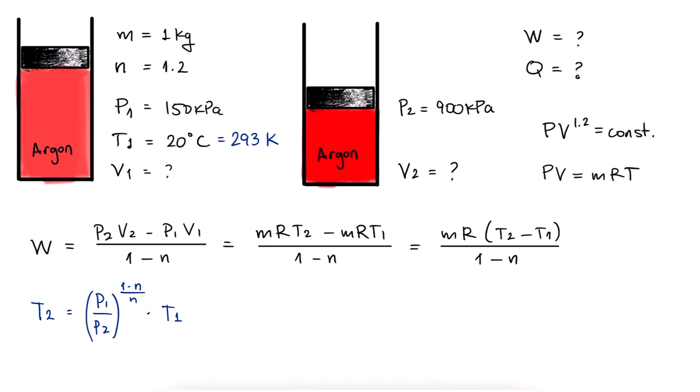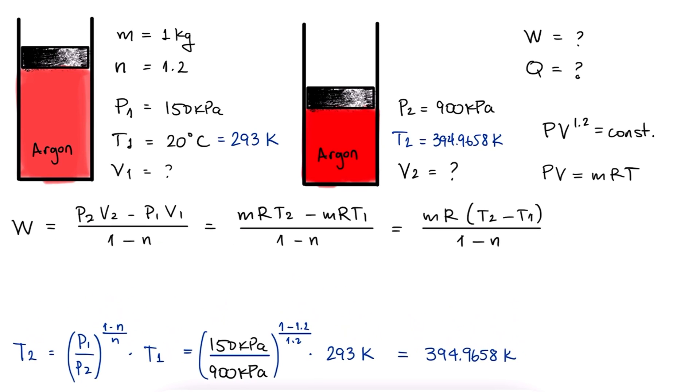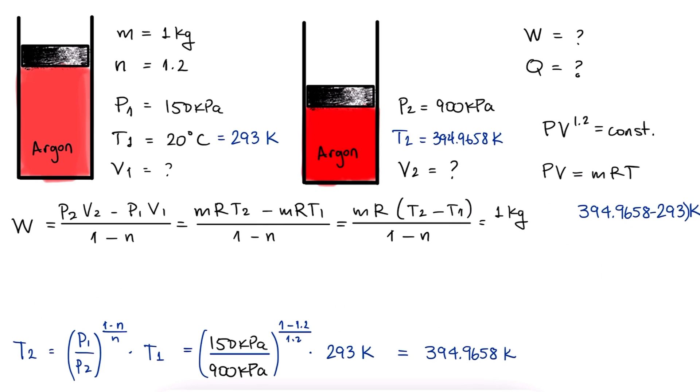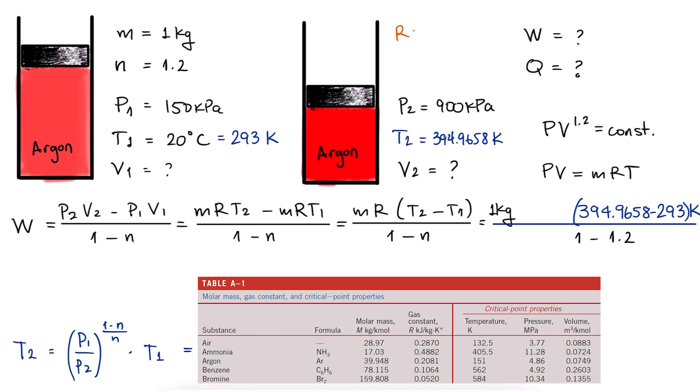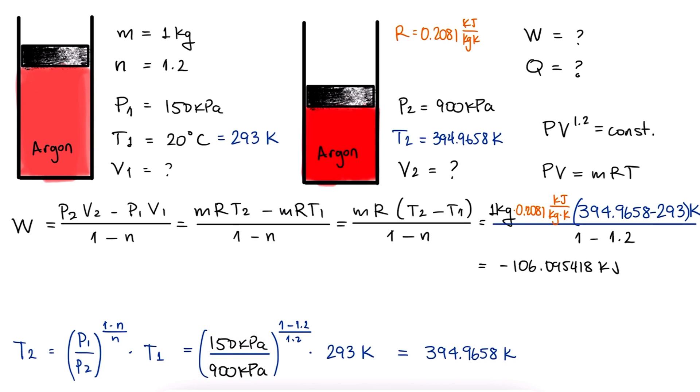With temperature 1 in Kelvin, we substitute all values and find a temperature of 395 Kelvin for T2. This information can be substituted in our modified equation for calculating the work, and after finding the gas constant R for argon, we find the work to be minus 106.1 kilojoules.